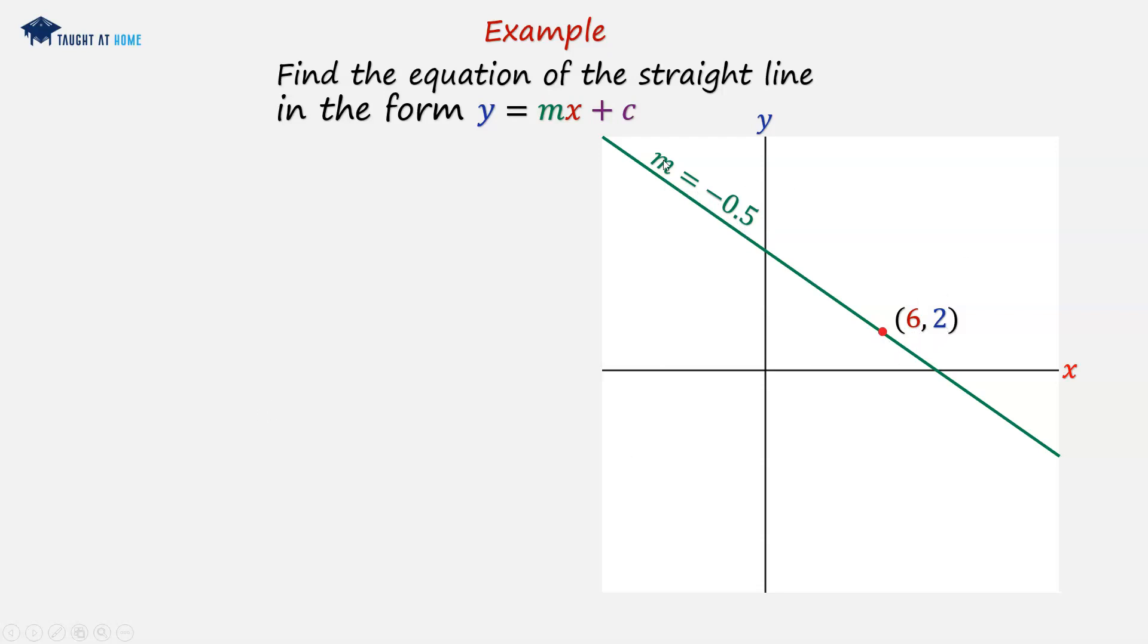So because we've got the m and we've got a point with a and b, we can use the alternate form y minus b equals m times x minus a, and we're going to substitute in this. So b is 2, so we can put 2 here.